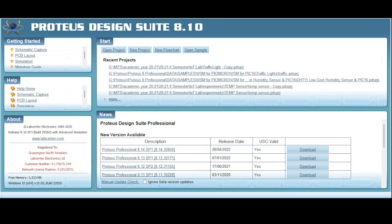First of all you have to open Proteus Design Suite and the version should be above 8 to use the Arduino board. Go to new project and when you open a new project it will ask for a name and a path to save. You can give your name and a default path wherever you want to save the project.